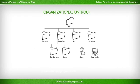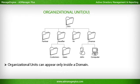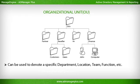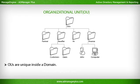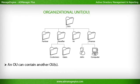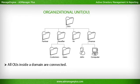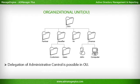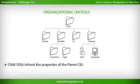Active Directory Organizational Units (OUs) can appear only inside a domain and can be used to denote a specific department, location, team, function, etc. OUs are unique inside a domain. They contain objects like users, groups, contacts, computers, printers, and shared folders. An OU can contain other OUs, and nested OUs have a parent-child relationship. All OUs inside a domain are connected. Group policy settings can be set at the OU level, and delegation of administrative control is possible. Child OUs inherit the properties of the parent OU.